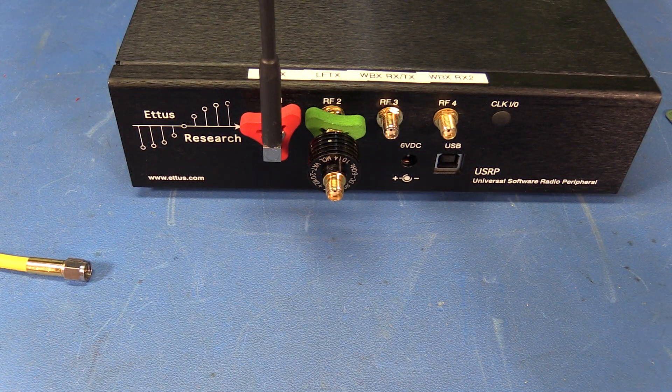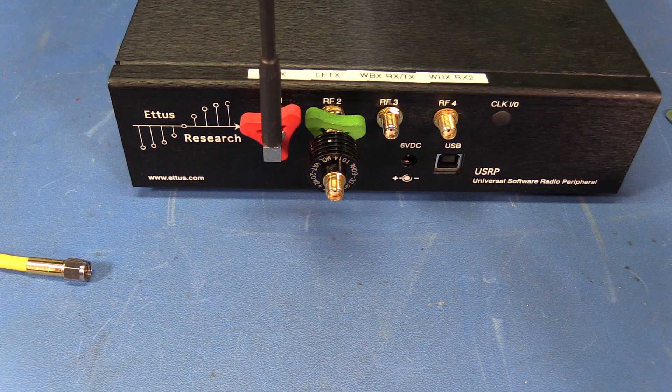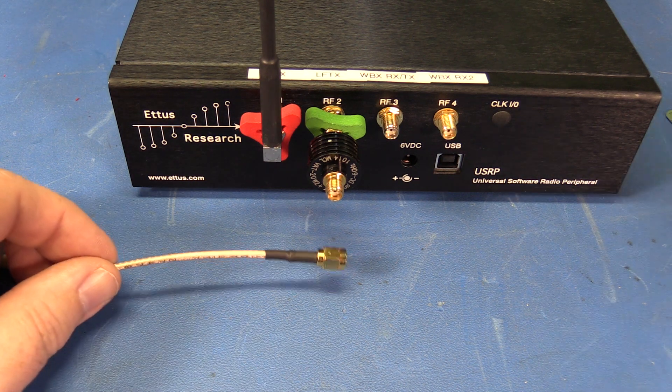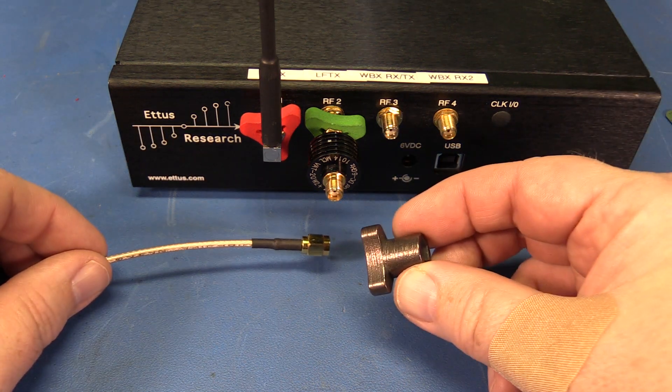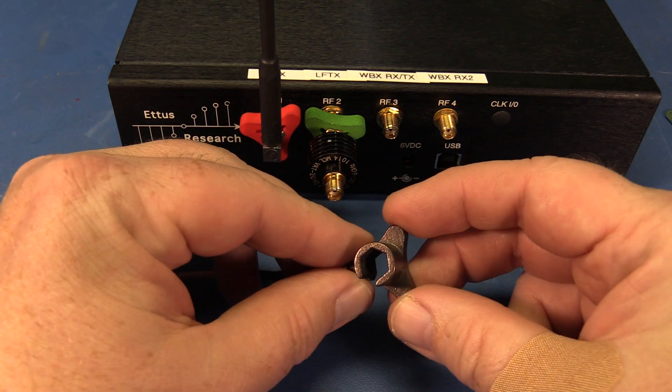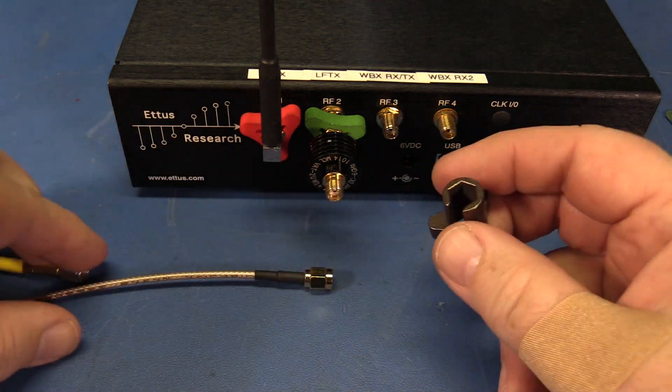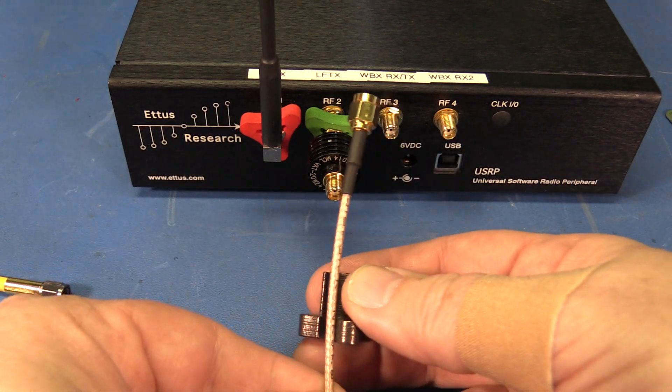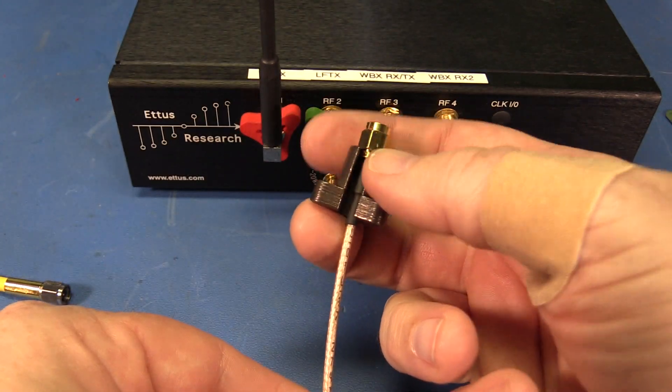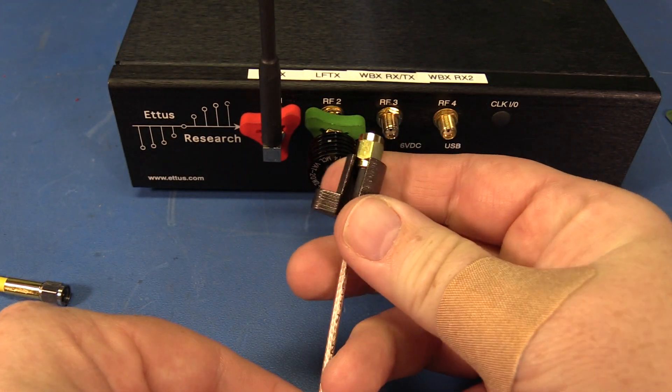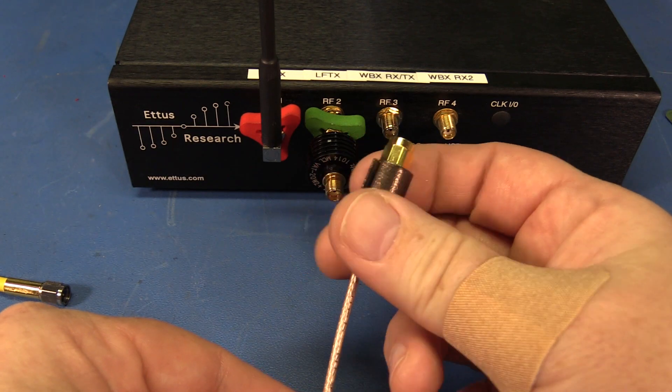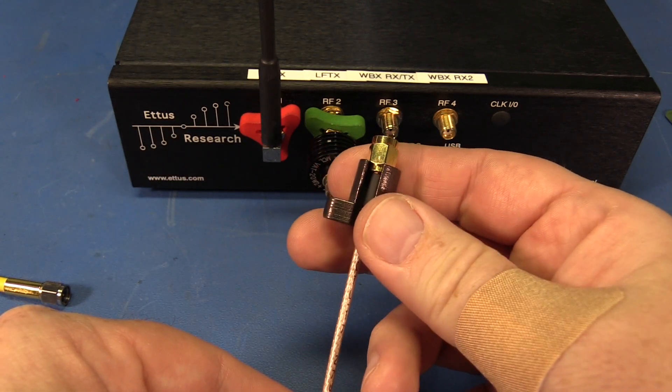Now for those times when you'd rather use a tool instead of having something pressed into place on the end of a connector, I also have the SMA wrench. This is a small metal barrel wrench which is designed so that you can slip it over the cable and then use it to tighten or loosen the threaded part of the male SMA connector.